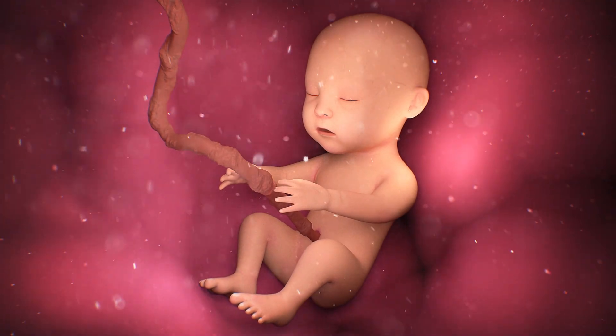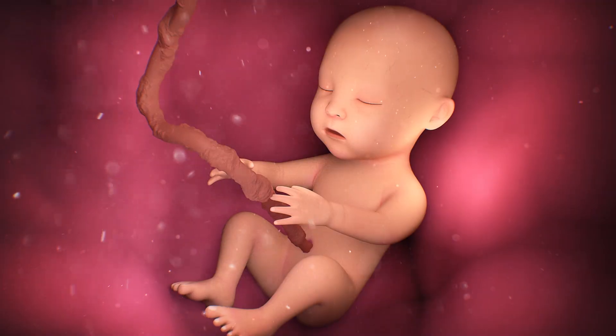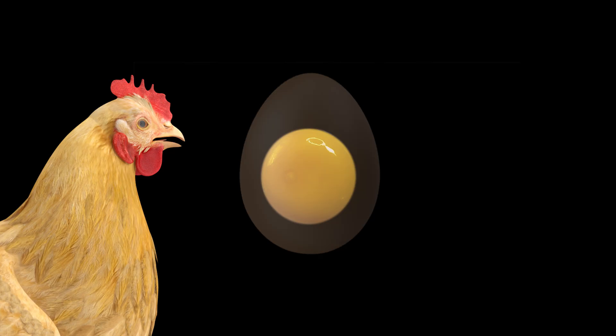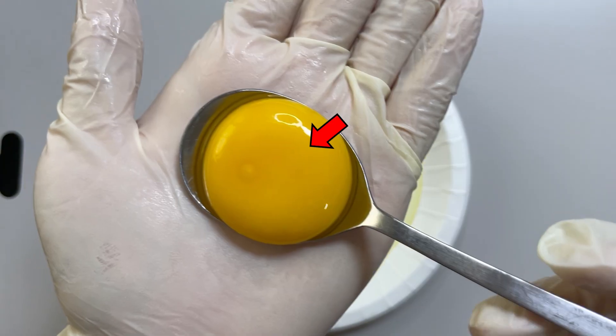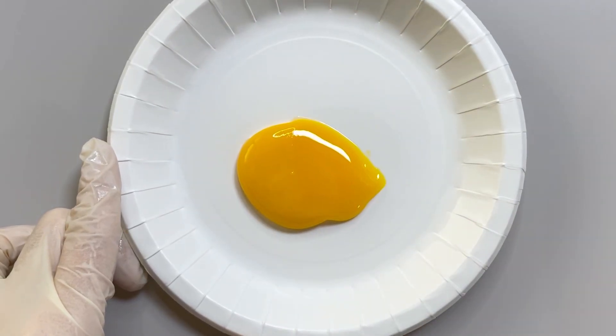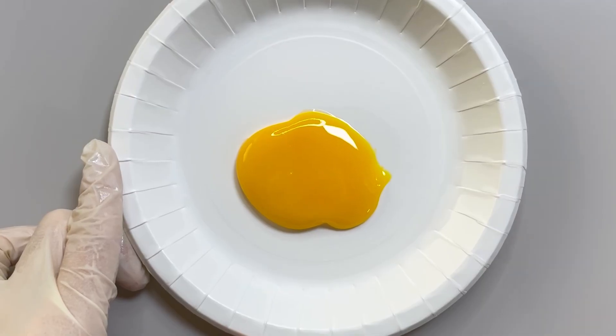However, while human babies receive nutrients from the umbilical cord, a chicken must grow into a chick inside the egg on its own. Therefore, it carries the necessary nutrients for development in advance, and that is the yolk. The yolk is rich in protein, fats, vitamins, minerals, and other nutrients.